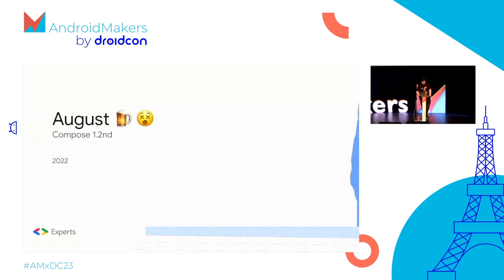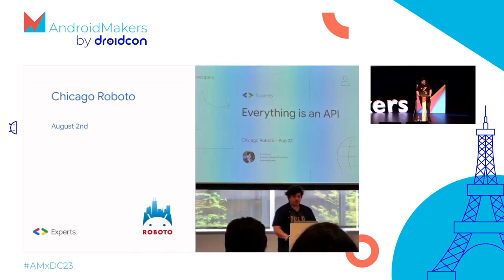Moving on to August — the month of International Beer Day and then International Hangover Day, which is very appropriate. I gave a talk in Chicago about everything as an API. Go check out the video. Unfortunately, Chicago Roboto is not continuing anymore, so that will be the last — very sad, it was a lovely conference.